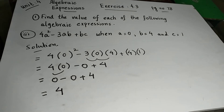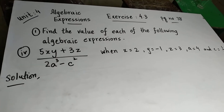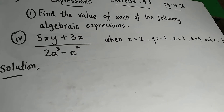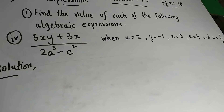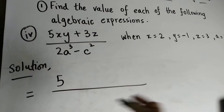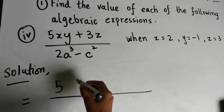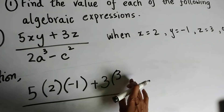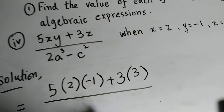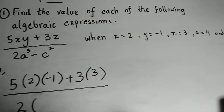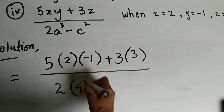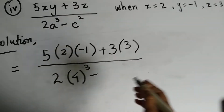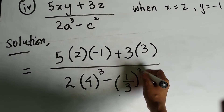Now we go to Part 4. The expression given is a fraction: numerator is 5xy plus 3z, and the denominator is 2a cubed minus c squared. The given values are: x equals 2, y equals 1, z equals 3, a equals 4, and c equals 1 over 3. We substitute these into the expression, writing 4 cubed in the denominator and (1/3) squared for c squared.